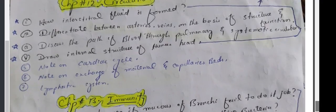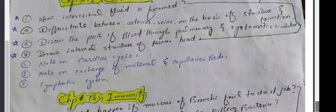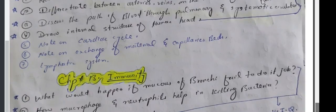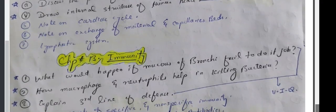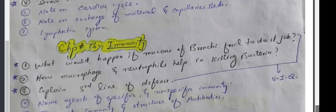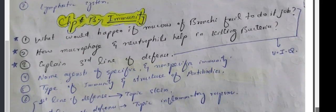Chapter 12. How is interstitial fluid formed? Differentiate between arteries and veins on the basis of their structure. Discuss the path of blood through pulmonary and systemic circulation. Draw internal structure of human heart. Note on cardiac cycle. Note on exchange of material and capillary beds. Lymphatic system.